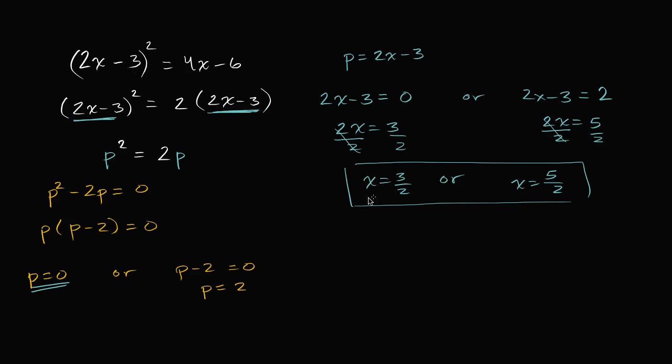You still would have, hopefully, gotten to the right answer. But it would have just taken a lot more steps. But here we could appreciate some patterns that we saw in our equations. Namely, we have this thing being squared, and then we have two times that same thing. Two times 2x minus 3.